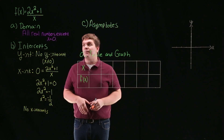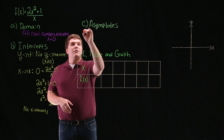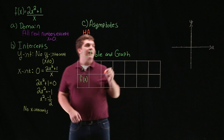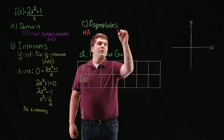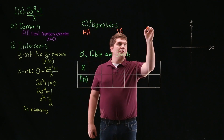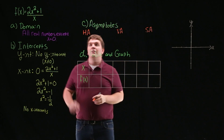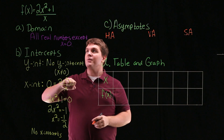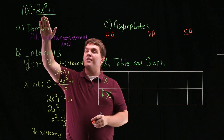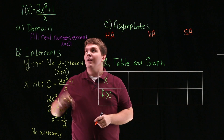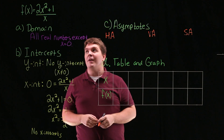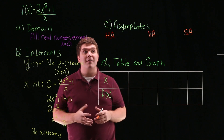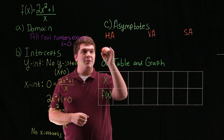Next, let's talk about asymptotes. There are three types of asymptotes: horizontal asymptotes, vertical asymptotes, and slant asymptotes. Looking at f, if we want to find horizontal asymptotes, we note that the degree of the numerator is 2 and the degree of the denominator is 1. Using what we know about horizontal asymptotes, we can say that f has no horizontal asymptotes.